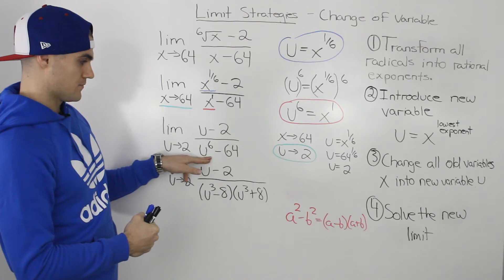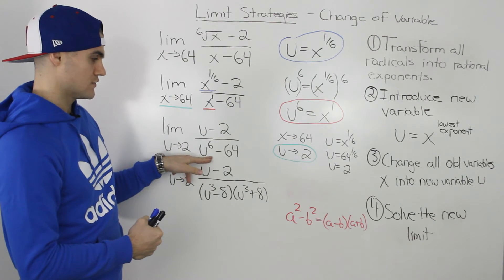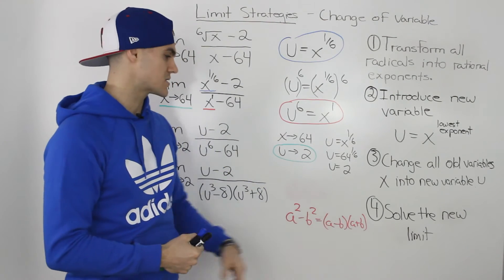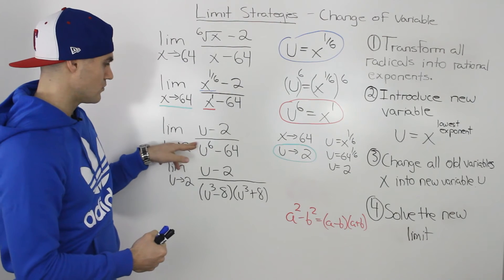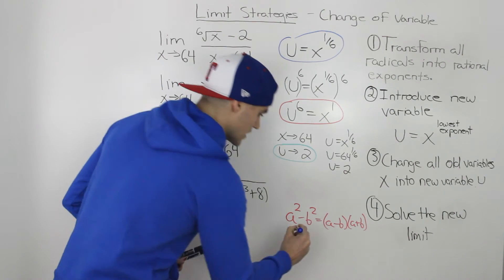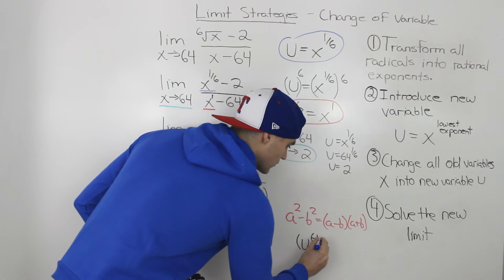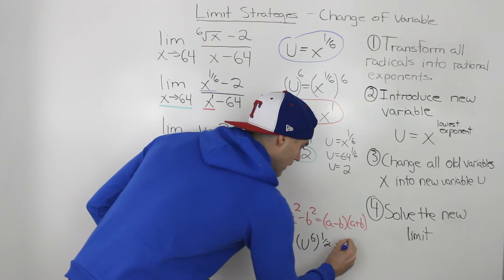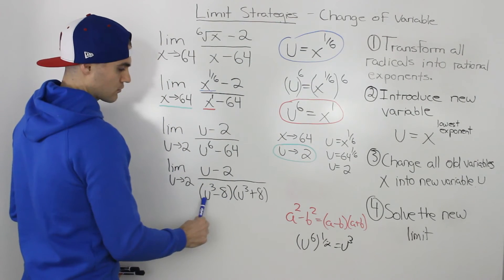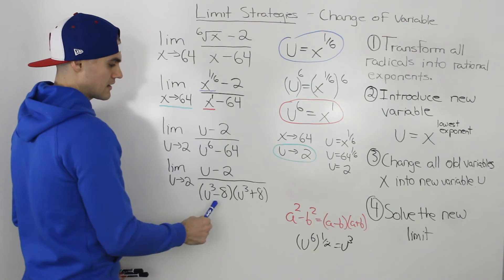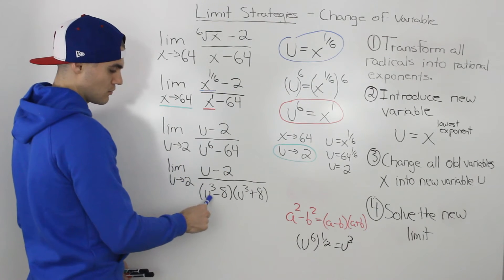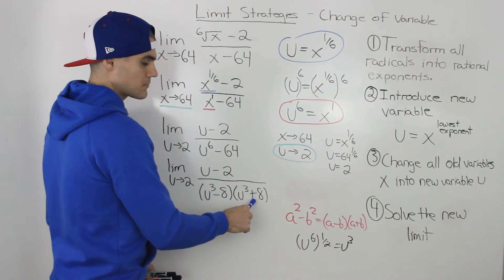We can recognize that u to the power of 6 minus 64 is a difference of squares, using the formula a squared minus b squared equals (a minus b)(a plus b). The square root of u to the power of 6 is u to the power of 3, and the square root of 64 is 8. So u to the power of 6 minus 64 factors into (u to the power of 3 minus 8)(u to the power of 3 plus 8).